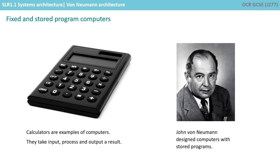The earliest computing machines had fixed programs. For example, a desktop calculator is an example of a fixed program computer. It can do mathematics, but it cannot be used for any other purpose. Changing a program of a fixed program machine requires rewiring or redesigning the machine.